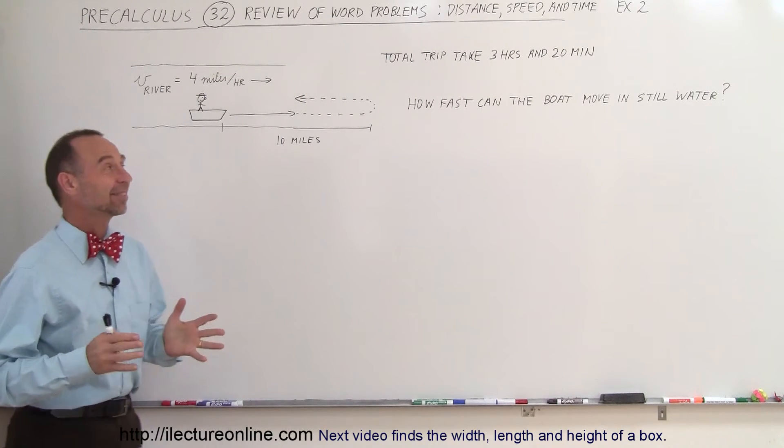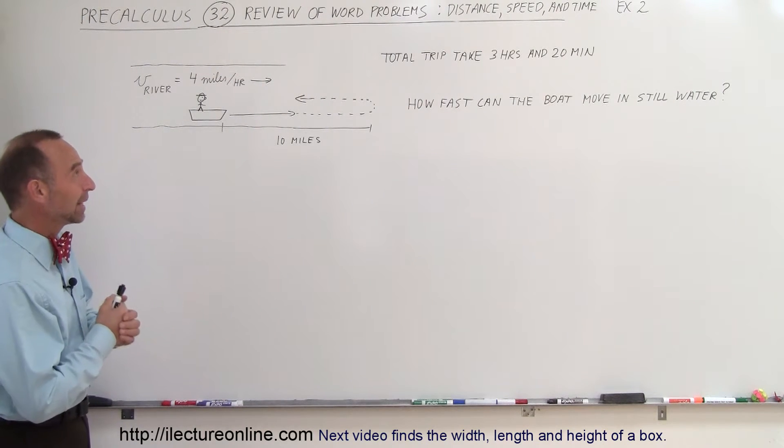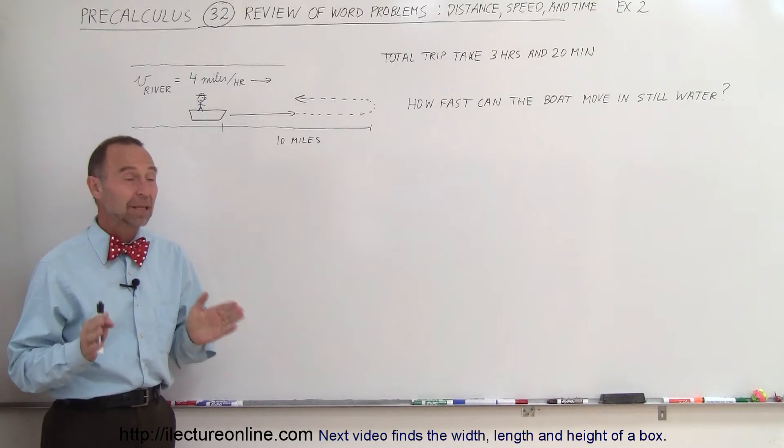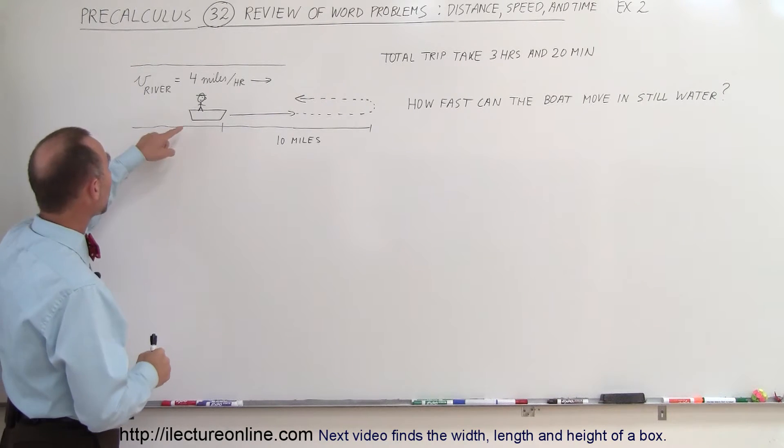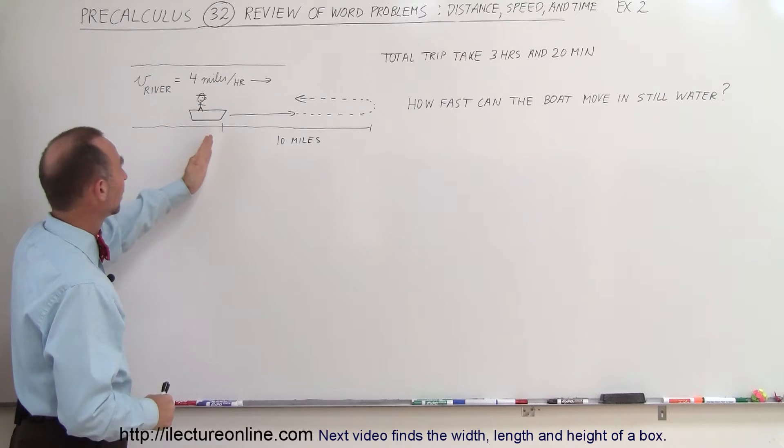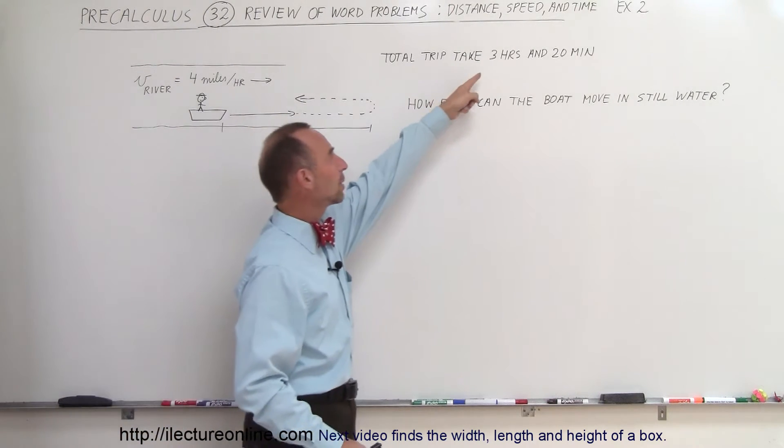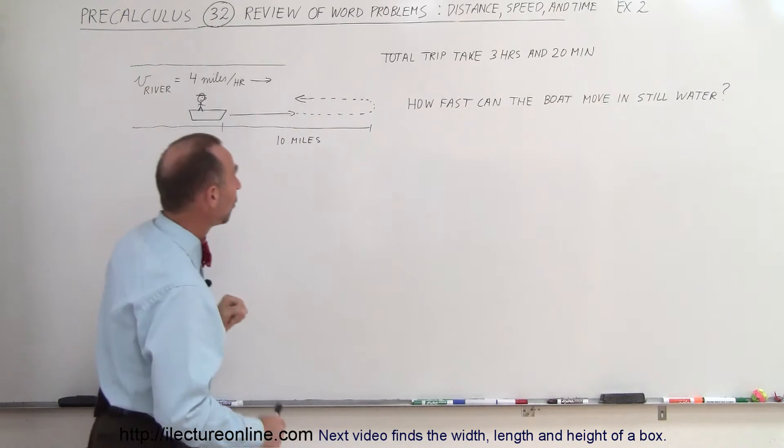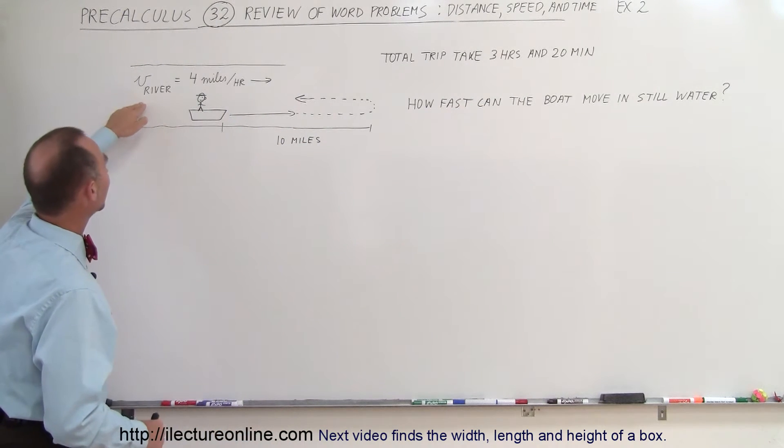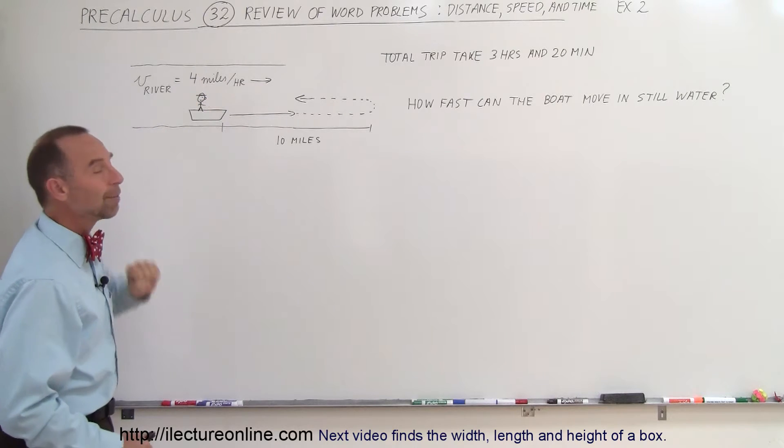Welcome to Electra Online and here's our next example of how to do a word problem dealing with distance, speed, and time. The example here is a boat traveling down the river, traveling a distance of 10 miles, turning around, coming back. Total trip takes 3 hours and 20 minutes.